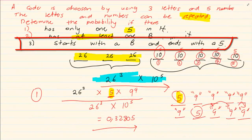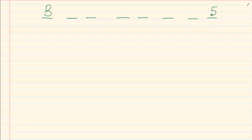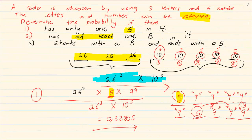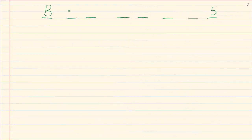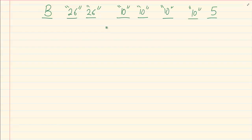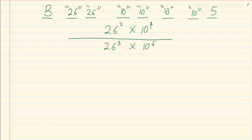The last question says the code must start with a B and end with a 5. We have three alphabet positions and five number positions. With B fixed at the start and 5 fixed at the end, the remaining two letter positions still have 26 options each and the remaining four number positions have 10 options each. So favourable outcomes are 26² × 10⁴. The probability is 26² × 10⁴ over 26³ × 10⁵, which equals 1 over 260.